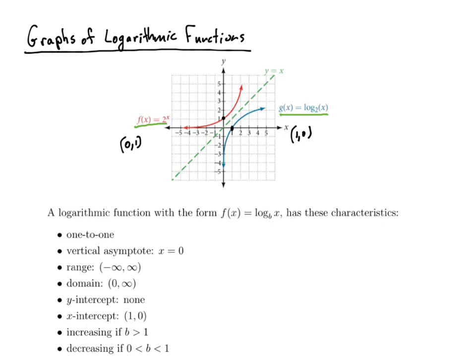Let's look at some of the characteristics of a log function. It is one-to-one, so it passes the horizontal line test. There's a vertical asymptote at x is equal to 0 — the y-axis serves as the vertical asymptote. While an exponential function had a horizontal asymptote, a log function has a vertical asymptote. The range is all real numbers, and the domain is 0 to infinity — all positive numbers. There is no y-intercept, and there's an x-intercept of (1, 0).